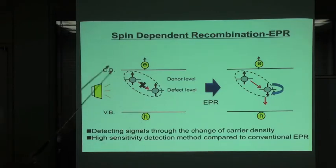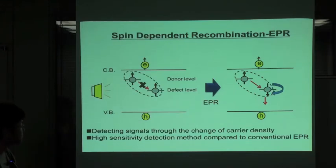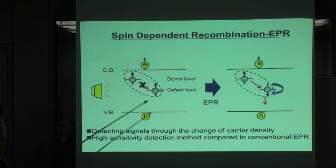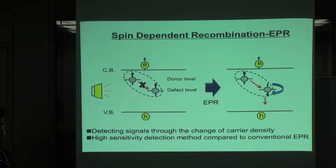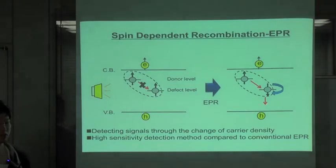The recombination is prohibited by spin blockade by Pauli's exclusion principle. Then, in the right figure, let's think about the situation that the electron spin at defect level is flipped by EPR. In that situation, the direction of the electron spin at donor level and defect level becomes anti-parallel, so the recombination is allowed.